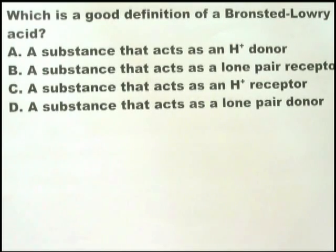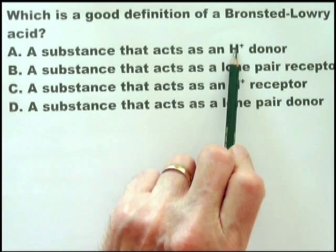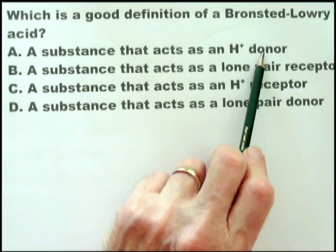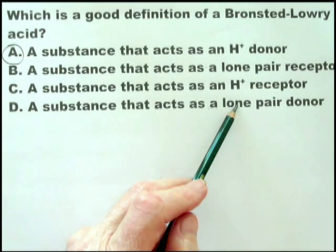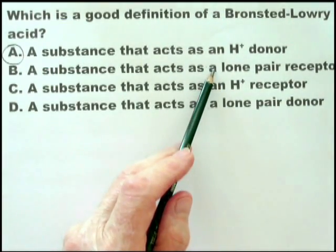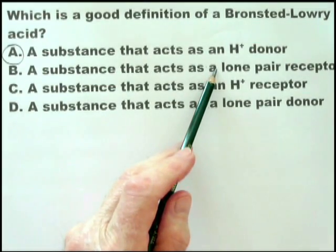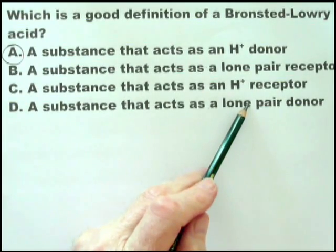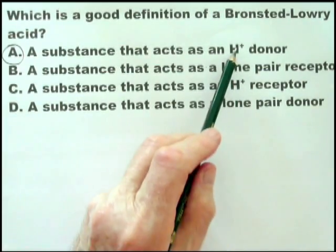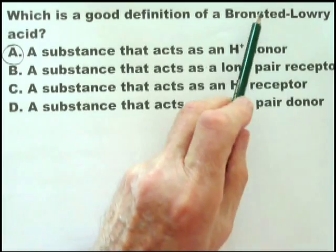As soon as you see the phrase definition of a Bronsted-Lowry acid, you must remember that Bronsted-Lowry refers to hydrogen ions. Is it a donor of hydrogen ions, in which case it's an acid? Is it an acceptor of hydrogen ions, in which case it's a base? So Bronsted-Lowry acid, a substance that acts as a hydrogen ion donor, just like sulfuric acid, hydrochloric acid, nitric acid. B and D refer to Lewis acid and base theory.